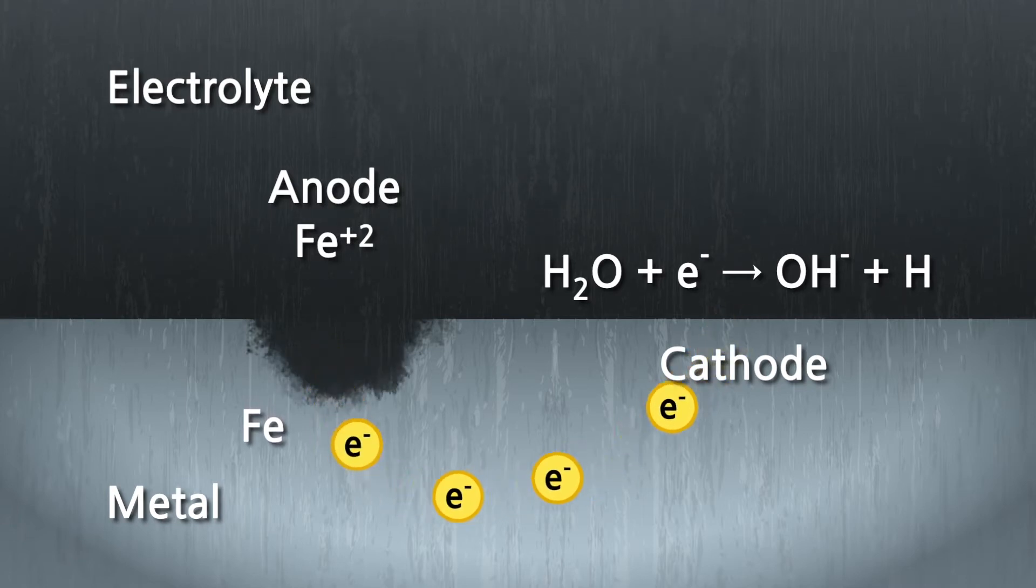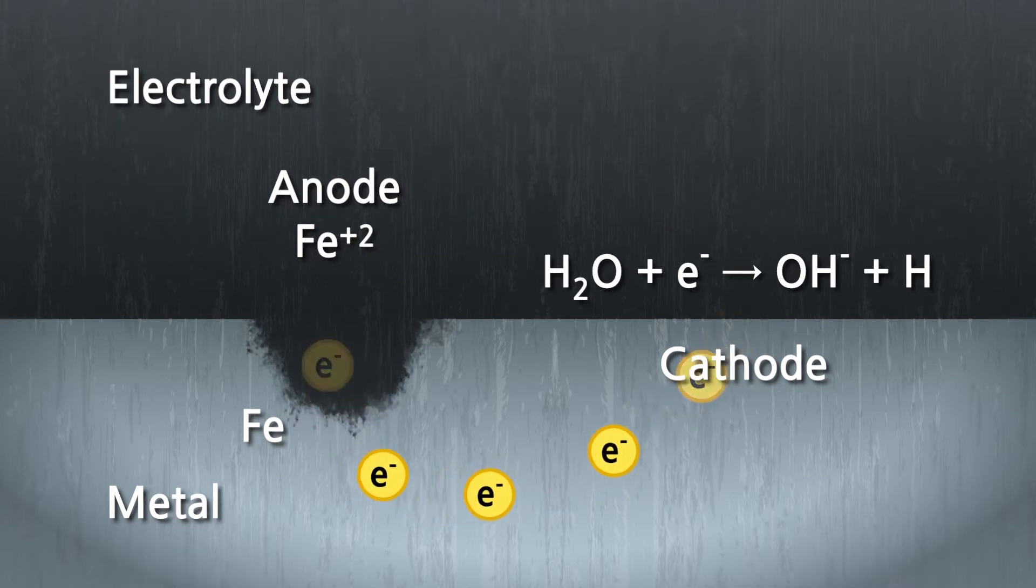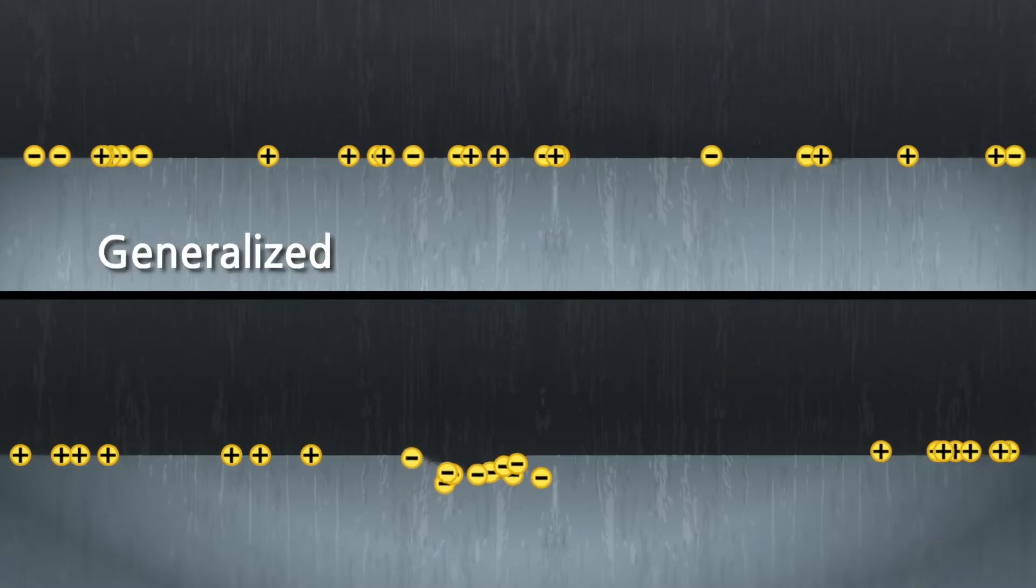Supported by these anodic and cathodic reactions, which are influenced by the surrounding environment, metal loss will occur over time. If any part of the corrosion cell is eliminated, corrosion will stop. Metal loss from corrosion can be generalized or localized.